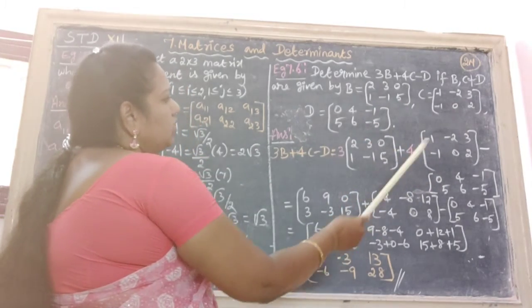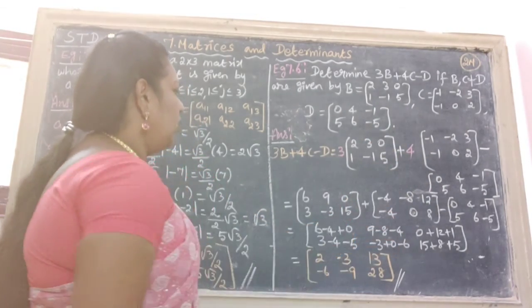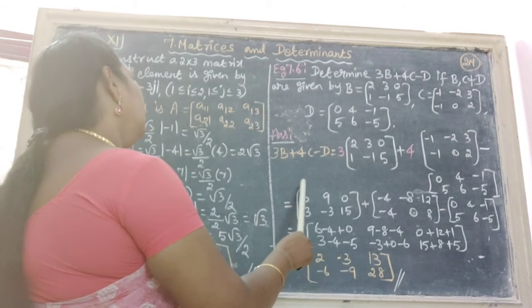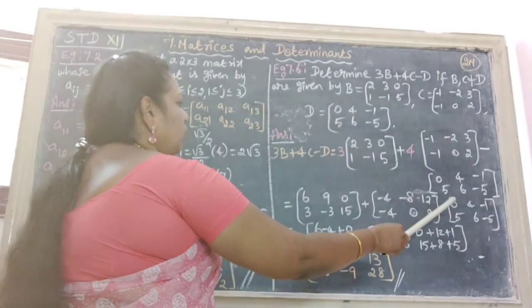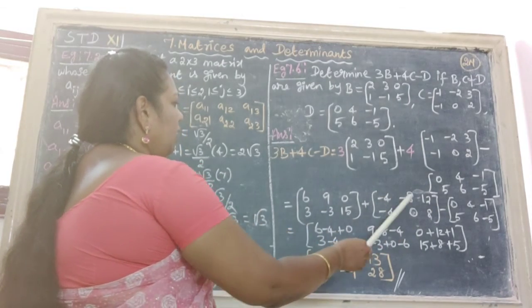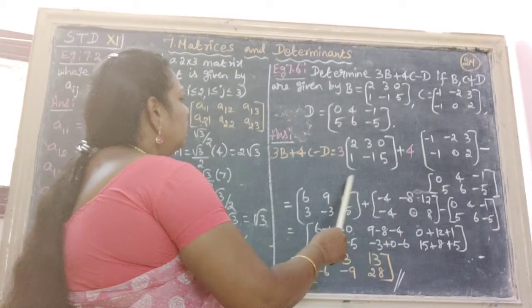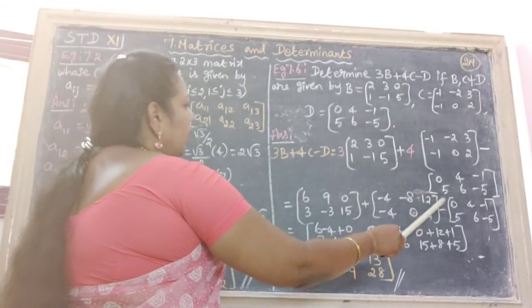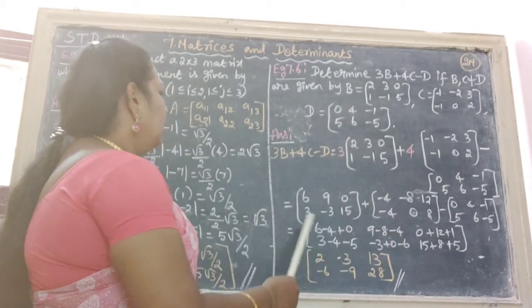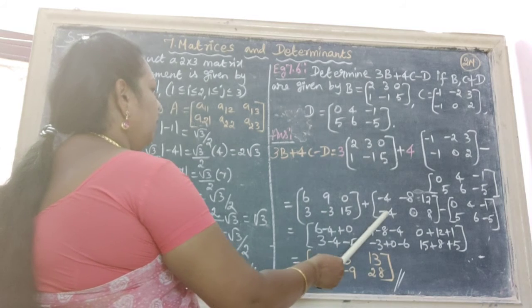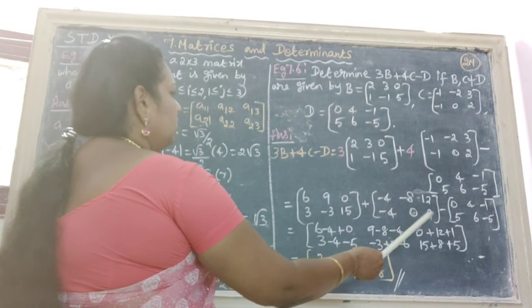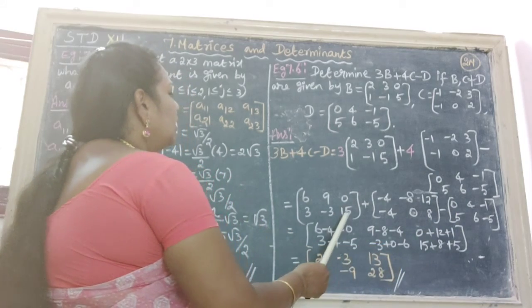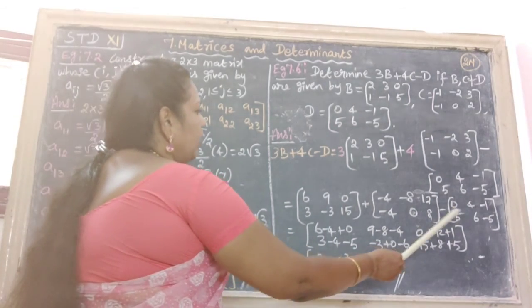Multiply by 3 we get this value, plus multiply by 4 in each element, we get this minus the last value. Therefore arranging, add with first places: 6 minus 4 plus 0, 9 minus 8 minus into 4, 0 plus 12 minus into minus plus 1. Next 3 minus 4 minus 5, next one minus 3 plus 0 minus 6, next one is 15 plus 8 minus into minus plus 5.